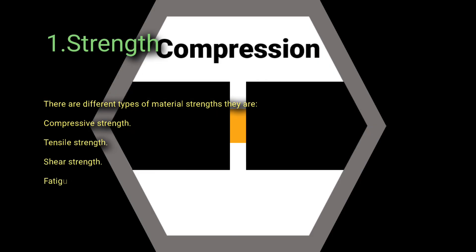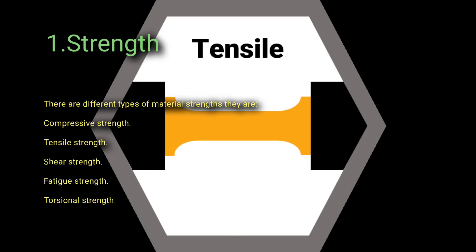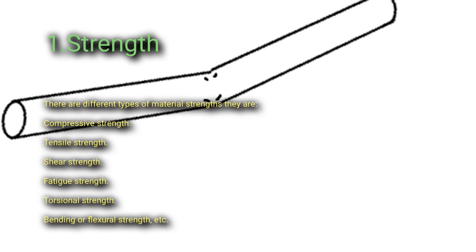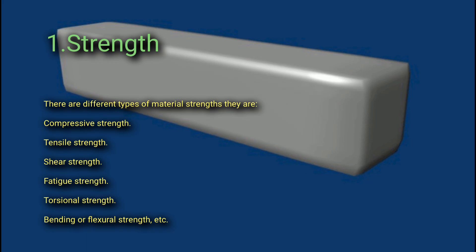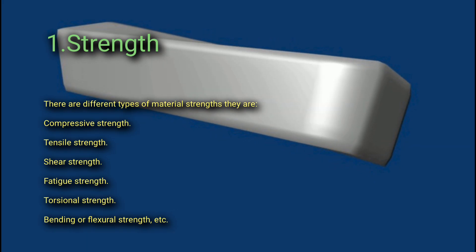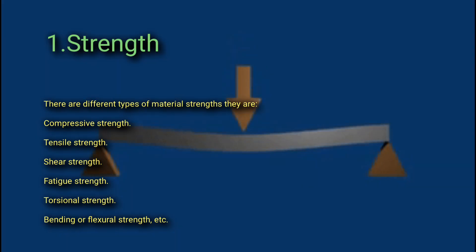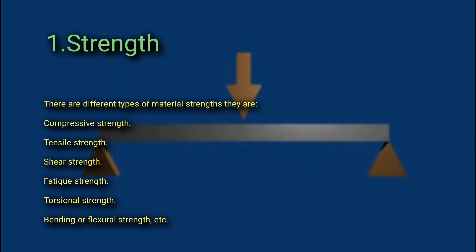There are different types of material strength: compressive strength, tensile strength, shear strength, fatigue strength, torsional strength, bending or flexural strength, etc.